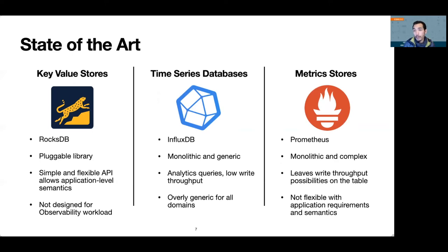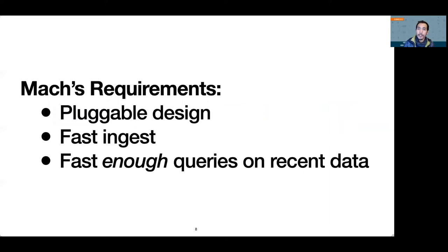Mach, the metric storage engine we are designing, addresses the limitations of each of these approaches. Mach is designed with three requirements in mind. First, because of the complexity of modern microservices, we need metric stores to have a simple and pluggable design allowing a wide range of applications to enforce their own requirements or semantics.